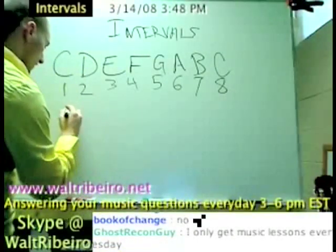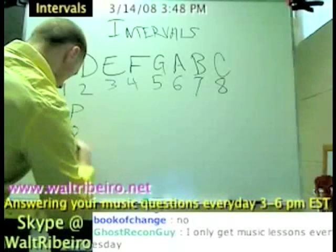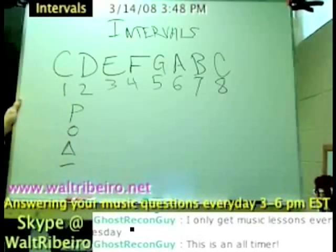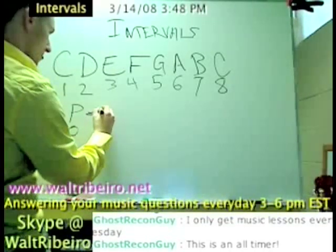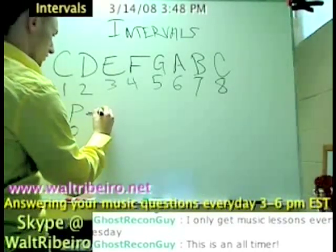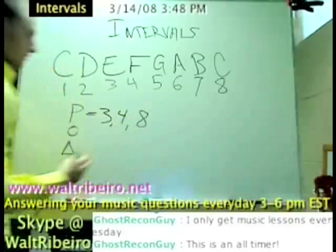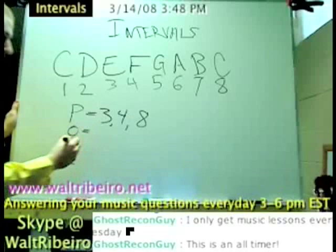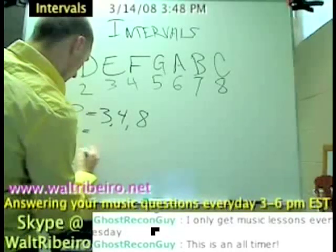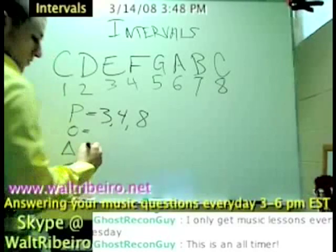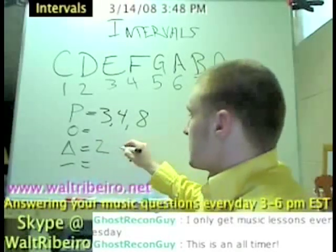So you have perfect, diminished, major, and minor interval types. Your perfect notes are things like your fourth, fifth, and eighth. Don't worry about diminished ones just yet.